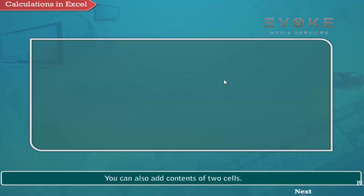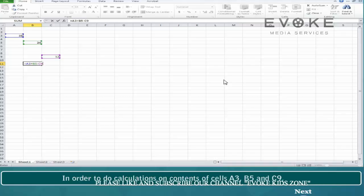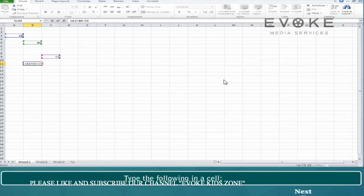You can also add contents of two cells. In order to do calculations on contents of cells A3, B5 and C9, type the following in a cell: equals to A3 plus B5 minus C9.